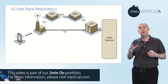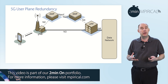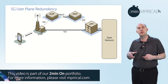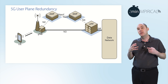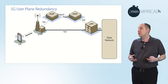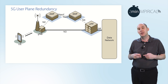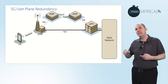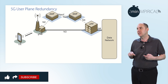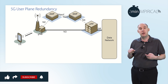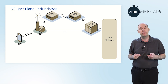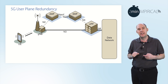Here we have an example of a device connected normally to a 5G network. You can see the user equipment connected through the gNB, the new radio node B, utilizing the core network functions — the Access and Mobility Function, the Session Management Function — and ultimately establishing a data connection through the UPF, the User Plane Function. That solid line goes from the device up to the gNB, across the N3 reference point, up to the User Plane Function, and out to the data network via the N6.